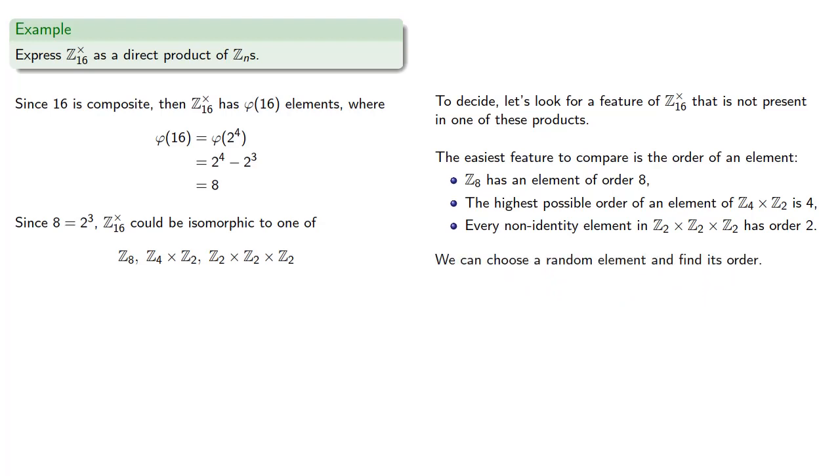So we could choose a random element and find its order. For example, let's pick the element 3. So the powers of 3 mod 16 are... This means we have an order 4 element. And so the integers mod 16 under multiplication can't be isomorphic to Z2 cross Z2 cross Z2.